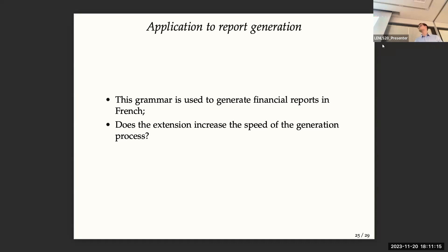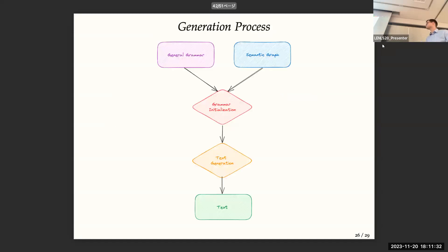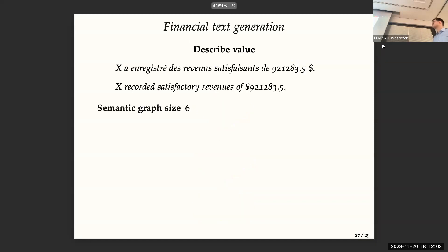And this grammar is used to generate financial reports in French. And we were asking, is it possible to increase the speed of the textual generation? So the generation process is based on a simple pipeline. So you have a general grammar which encodes the encoding of a TAG grammar. You have a semantic graph. You initialize the grammar from the semantic graph. And because we need to add lexicalization, that's why we do the semantic graph. And then we do textual enumeration.